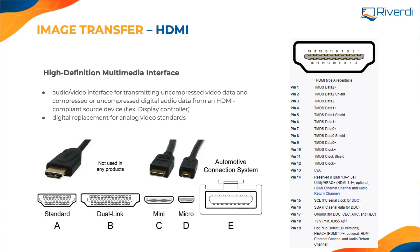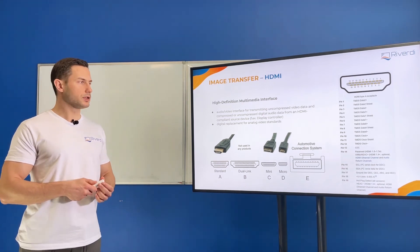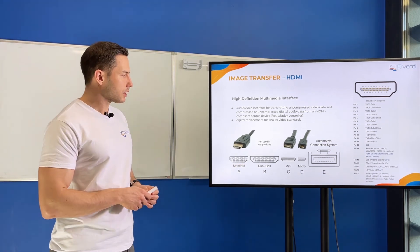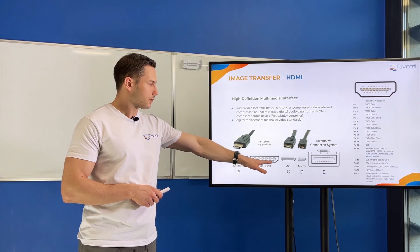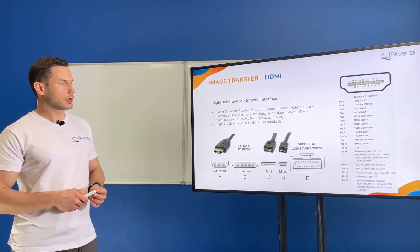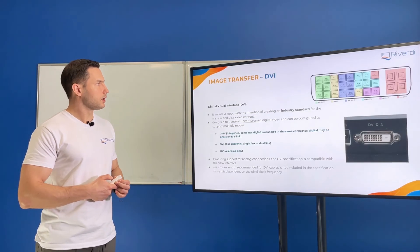Now let's jump from the universal USB interface into image transfer interfaces. The most common on the market is of course HDMI — High Definition Multimedia Interface. It's 'multimedia' because it transfers not only the image but also sound. So if you connect your computer to your TV, you have just one cable for both video and audio. We have a few variations of HDMI connectors: standard HDMI, mini HDMI, and micro HDMI — slightly different connectors but the pinout and everything else is the same. It's a popular and easy-to-use interface.